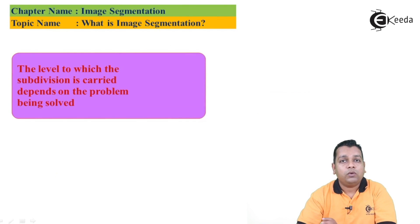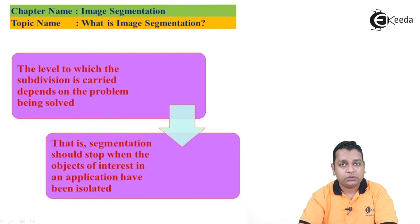Now while having the segmentation process done onto the input digital image, the level to which the subdivision is to be carried in such examples actually depends on the problem being solved, the application that we are dealing with. So with respect to this point, we must say that the segmentation should stop when the objects of interest in an application have been isolated. So this particular process is one of the important steps to carry out the segmentation here.